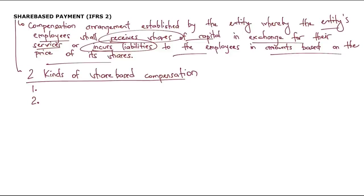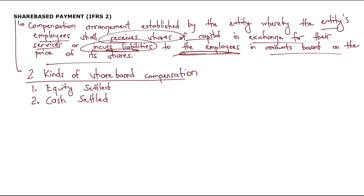Based on that definition, we have two kinds of share-based compensation. The first is equity-settled share-based compensation, because the employees shall receive shares. The second is cash-settled share-based compensation, because the entity incurs liabilities to the employees — meaning the entity needs to give money.